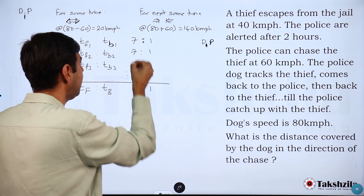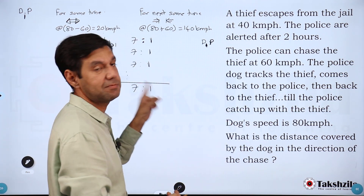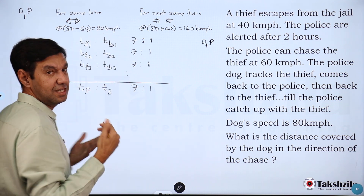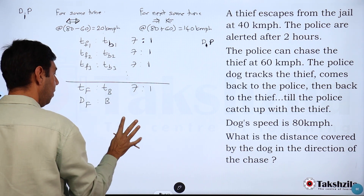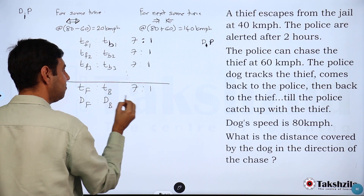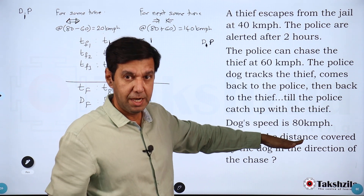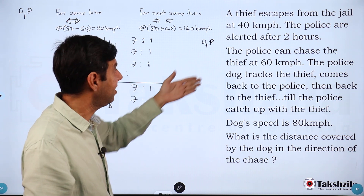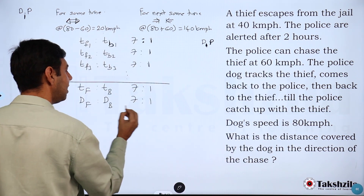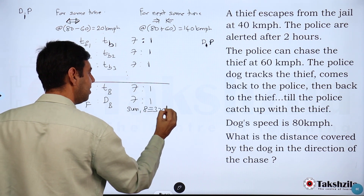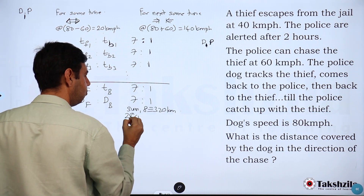Since the dog runs at constant speed, the distance ratio forward to backward is also 7:1. Total distance = 320 km. Splitting in ratio 7:1 gives forward = 7 × 40 = 280 km and backward = 1 × 40 = 40 km. Same answer again. The total 320 is found simply as 80 km/h × 4 hours.